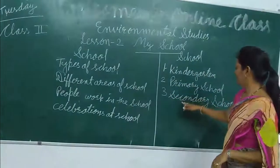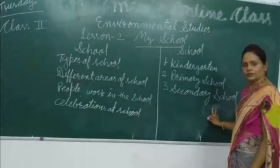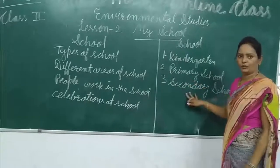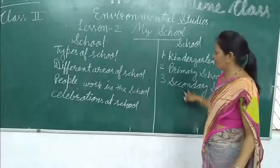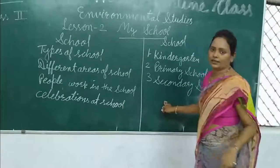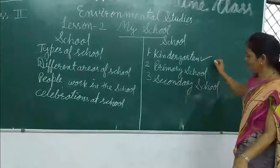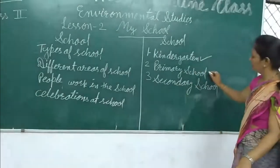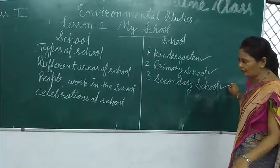After that, here is secondary school. Children, after completing their primary school, go to secondary school. So there are three kinds of schools: kindergarten, also called play school, primary school, and secondary school.